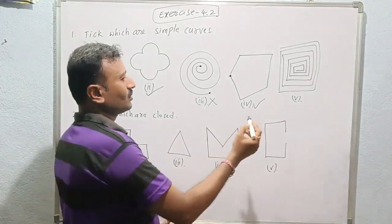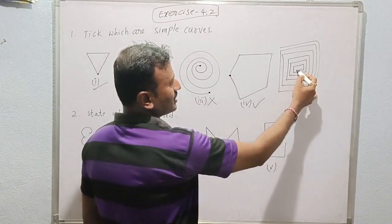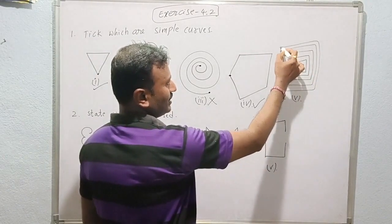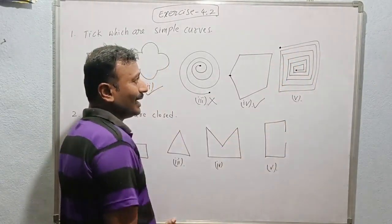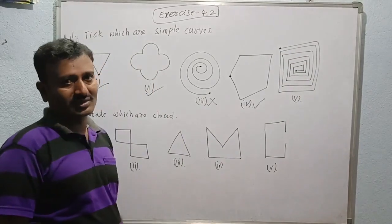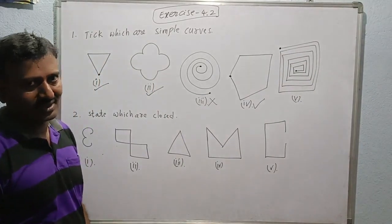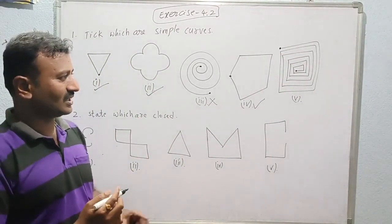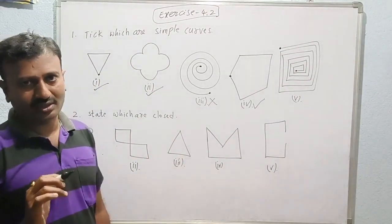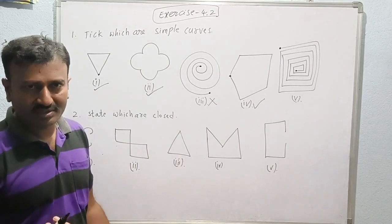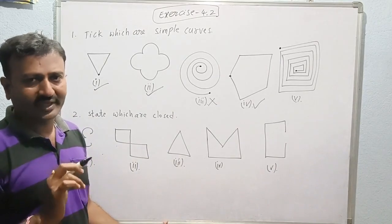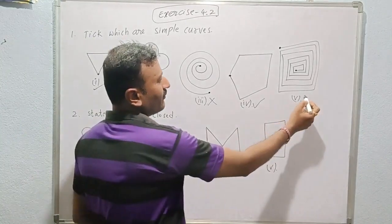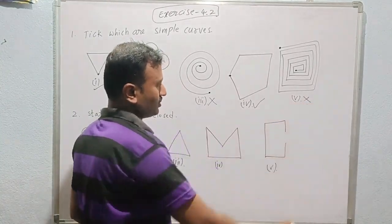Coming to the fifth one, the starting point and ending point should meet and be the same, but they do not meet. So this is also not closed. Not closed means we cannot say it is a simple curve. We can cross it out.